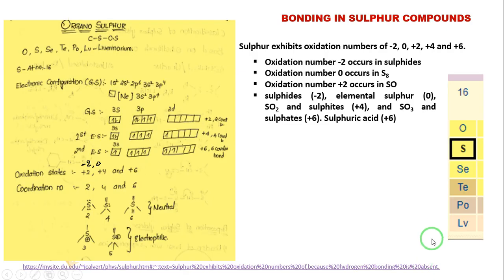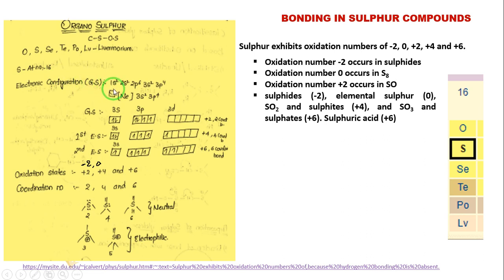Next, let us discuss about the bonding present in sulfur compounds. As mentioned, sulfur is present in the 16th group of the periodic table and its atomic number is 16. Its electronic configuration is 1s², 2s², 2p⁶, 3s², 3p⁴. We can also write this as [Ne] 3s², 3p⁴.